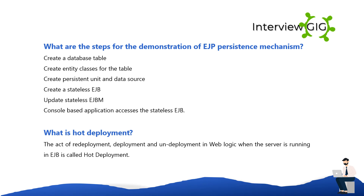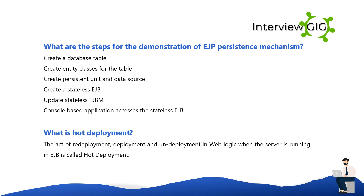What are the steps for demonstration of EJB persistence mechanism? Create a database table. Create entity classes for the table. Create persistent unit and data source. Create a stateless EJB. Update the stateless EJB. A console-based application accesses the stateless EJB. What is Hot Deployment? The act of redeployment, deployment, and undeployment in WebLogic when the server is running in EJB is called hot deployment.